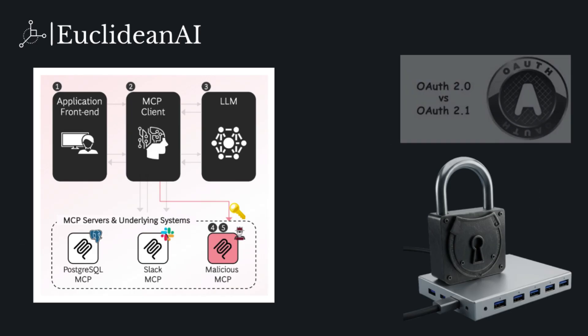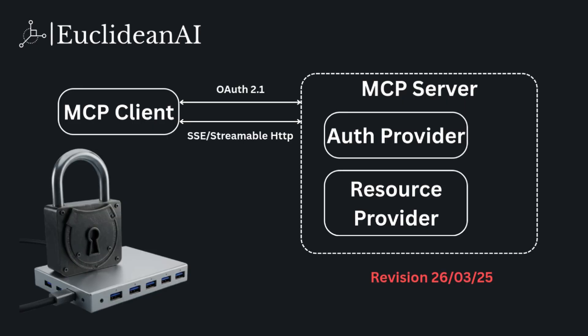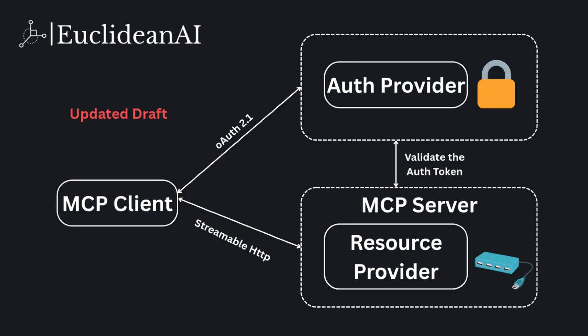Let's look at how the original MCP spec, published on 26 March 2025, approached this problem. The Anthropic team proposed that the remote MCP server should act as both an OAuth provider — authenticating clients and issuing bearer tokens — and a resource provider serving tools, resources, and prompts. This makes the MCP server much heavier. No longer just a lightweight USB hub for AI tools, but a full-fledged server with complex OAuth 2.1 responsibilities. Implementing OAuth is non-trivial. There are already specialized solutions for this, like Auth0, AWS Cognito, or Supabase Auth for Next.js stacks. Offloading authentication to these providers is often preferable to reinventing the wheel within every MCP server.